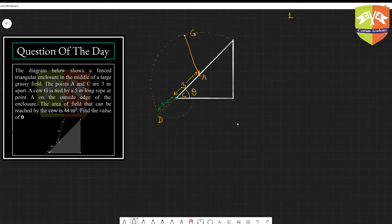The points A and C - you can see there is a point A and there is a point C here - are three meters apart, so this distance is three meters. And a cow G, here is the cow, is tied by a five meter long rope at point A on the outside edge of the enclosure.